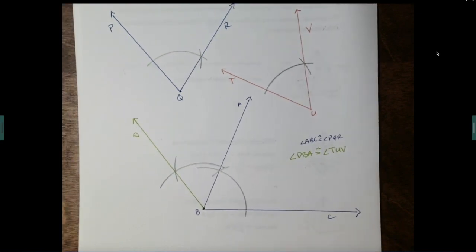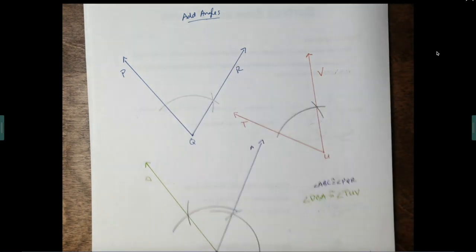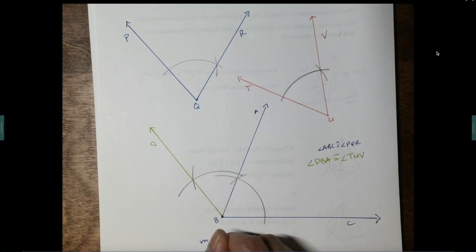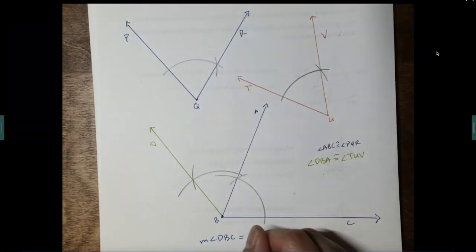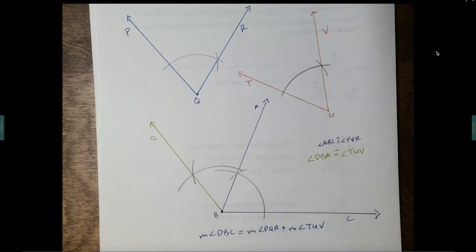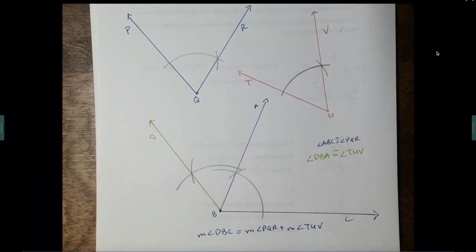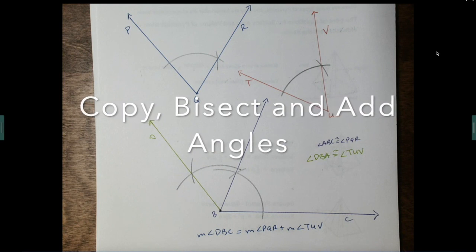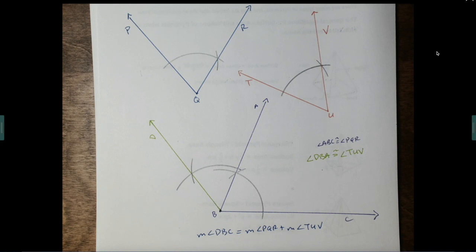We've copied both angles adjacent to one another — that is how you add angles. To write an equation expressing this: the measure of angle DBC equals the measure of angle PQR plus the measure of angle TUV. And we are done. We've learned three construction techniques: copying an angle, bisecting an angle, and adding angles. Thank you very much — hope you enjoyed the video, good luck with your homework tonight, and I'll see you in the next video.